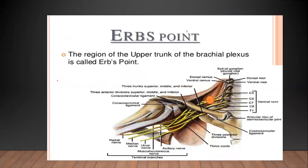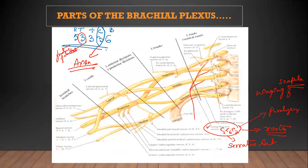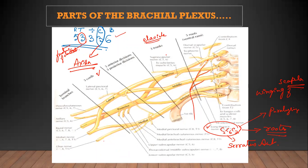Now looking at the lateral, medial, and posterior cords — you can remember the number of branches from each junction like a phone number: 5-3-3-3-6. Near the axilla, you have the cords. When there is damage to the trunk — that means near the clavicle — if there is a clavicle fracture, the branches from the trunk will get damaged.